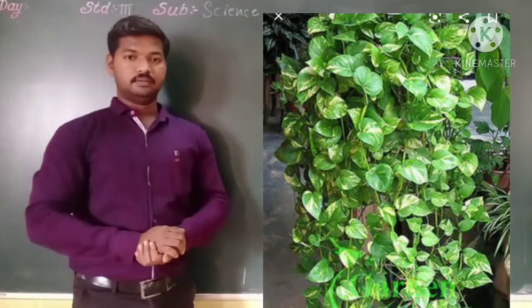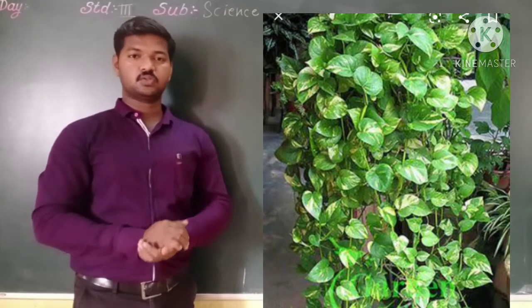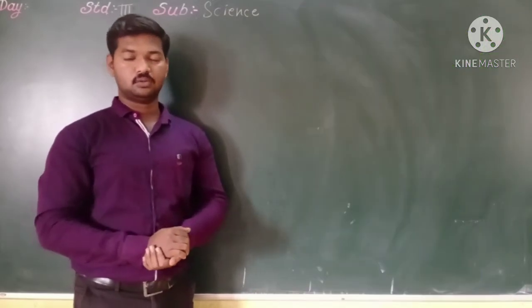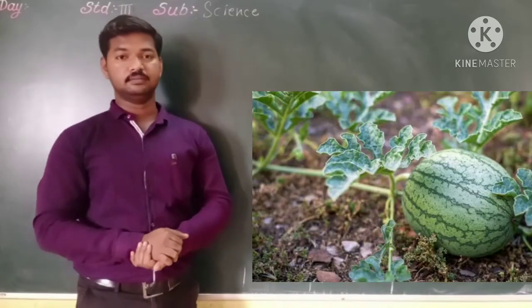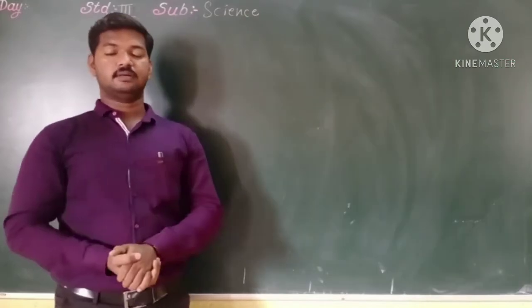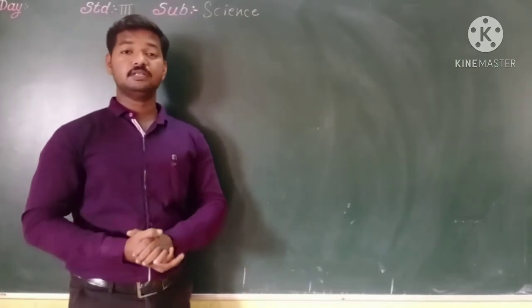Example of climber is money plant. Plants those who grow along the ground, they are known as creepers. And the examples of creepers are watermelon, pumpkin, etc.